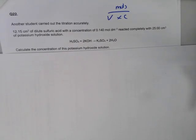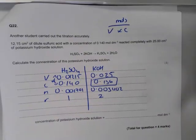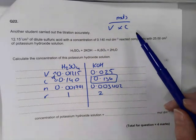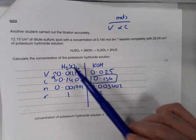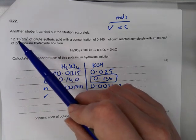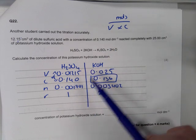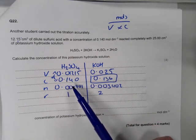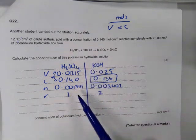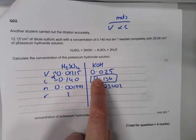Next is a titration calculation, done in a table but with a different formula: moles = volume × concentration (not G-Mr-moles). I'm given information about H₂SO₄ and KOH. Volumes must be in dm³, so divide 12.15 cm³ by 1,000. Concentration is 0.140; multiply volume by concentration to get moles. The ratio is 1:2, so multiply moles by 2. Then for KOH: concentration = moles ÷ volume.